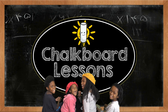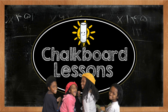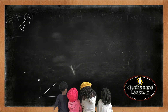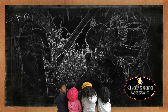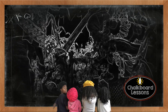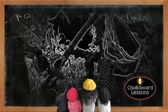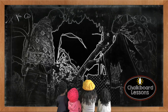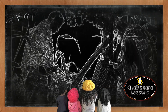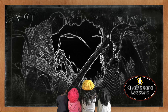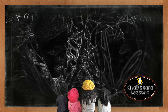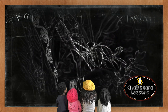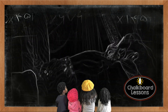Chalkboard Lessons! In this edition of Chalkboard Lessons, we will be teaching students the names of all of the twelve tribes of Yisrael in the order in which they were born to their father Jacob, whose name was later changed to Yisrael. We will also teach the names of their mothers of whom they were born, what each of their names mean, and what stone represents their individual tribes.